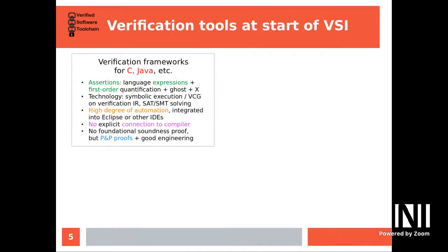About 15 years ago, when the VST initiative started, you could essentially classify the world into two kinds of verification approaches. One had target languages that were industrial-strength languages really in use, with relatively simple assertions — first-order expressions often reusing the expression language of the programming language. The technology was mostly automated VC generation, often using intermediate languages applicable to several languages, with quite high automation, SMT solving in the background, but no explicit connection to the compiler and no foundational soundness proofs.